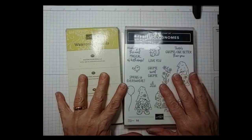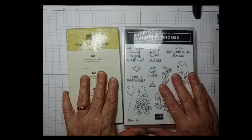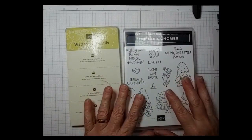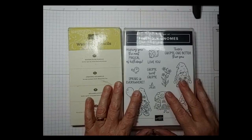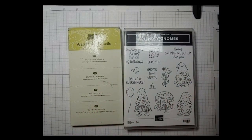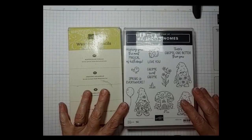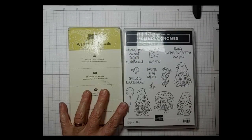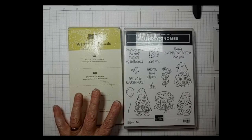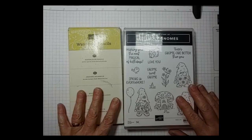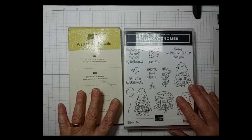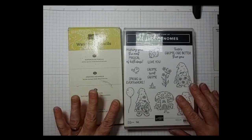Tonight I'm using these products: the Friendly Gnomes stamps, watercolor pencils, the dies that go with this, and some designer series paper. It is Happy Forest Friends designer series paper from the annual catalog. You can't see me tonight because my camera is broken, so I'm going to just have to do this with the desktop view.